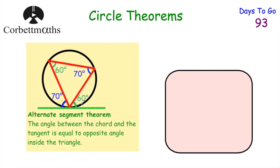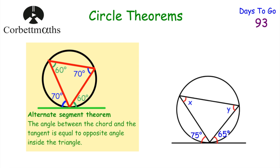Our next circle theorem is the alternate segment theorem. The angle between the chord and the tangent is equal to the size of the opposite angle inside the triangle. So a 70-degree angle between chord and tangent equals the opposite angle inside the triangle, and similarly for 60 degrees. In the example, x equals 65 degrees and y equals 75 degrees. You could also find angle z by doing 75 plus 65 and subtracting from 180, or by using the triangle directly.